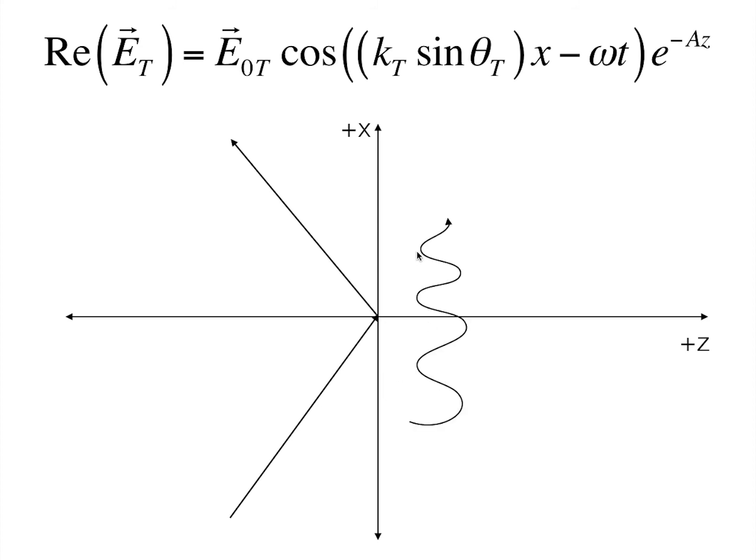we have an electric field like this in this direction. And because of this term, the amplitude of this electric field decays exponentially as we move along the plus z direction, as shown here. And this decays exponentially.